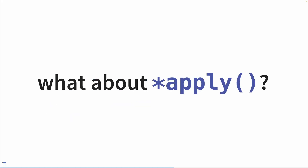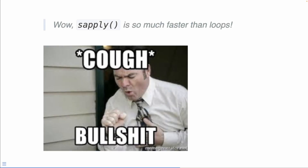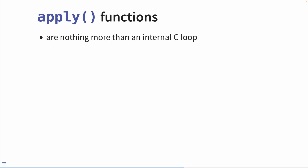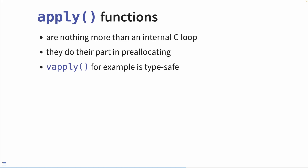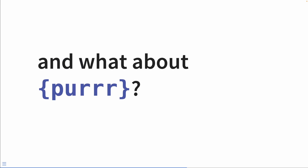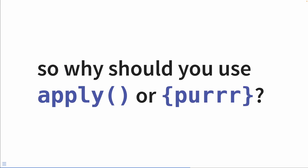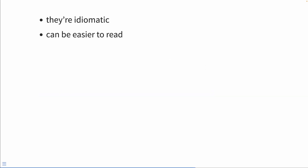Enough of the for loops — apply is faster, just use those, you say. Well, as Florian Privé wrote in his wonderful blog post: bullshit. Apply functions are not vectorized; they're no more than an internal C loop, and they do their part in pre-allocating, which is why they get that right when you don't. There are things like vapply, which is type-safe. Apply is actually just roughly the same speed as a for loop. Purrr is also a C loop. So why should you use apply or purrr? They're idiomatic, they can be easier to read, and often they result in fewer lines of code.